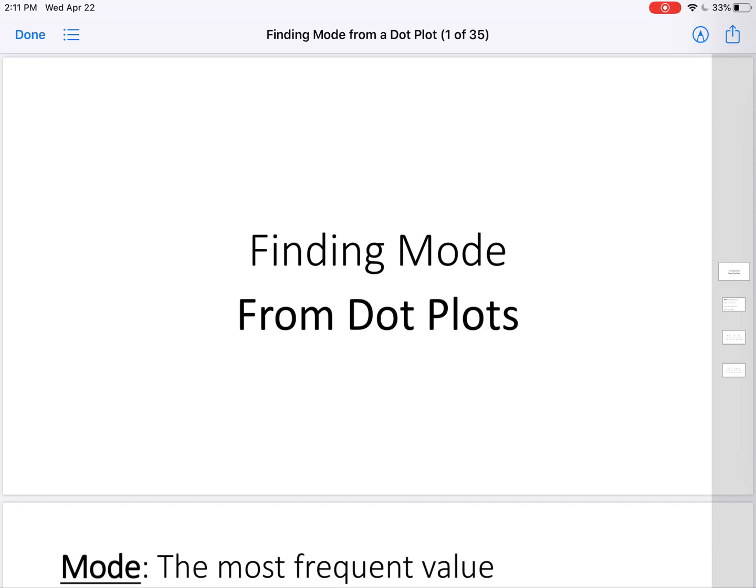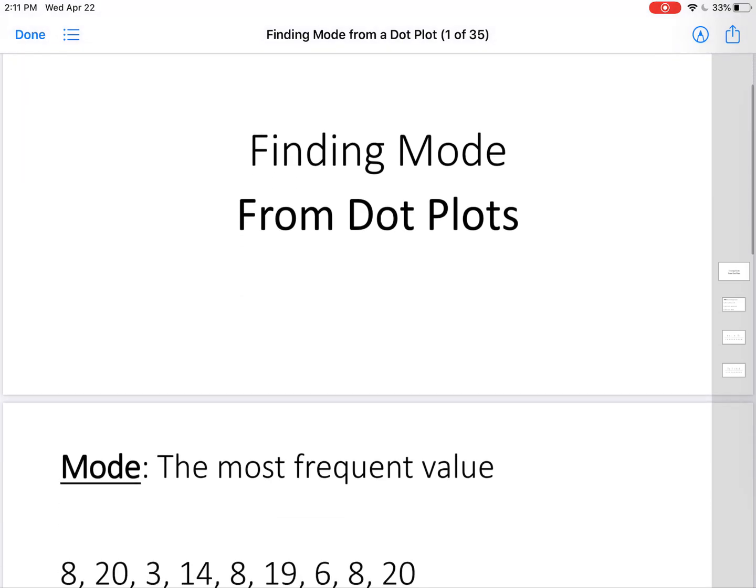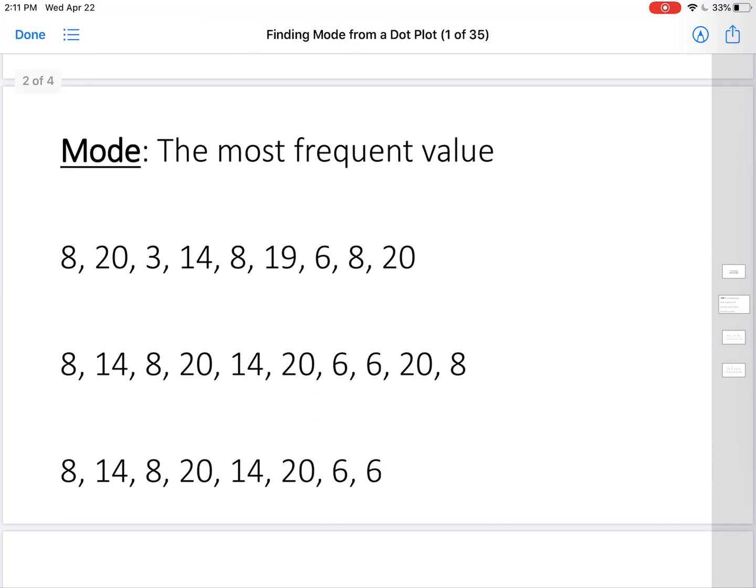Continuing with statistics, now we're going to use the dot plot and see if we can find mode from a dot plot. Mode is the most frequent value.